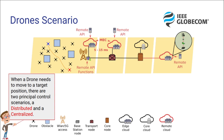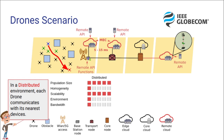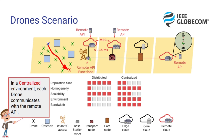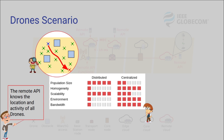When a drone needs to move to a target position, there are normally two principal control strategies: distributed and centralized. In a distributed environment, each drone communicates with its nearest devices, and the drones know the location and activity of the network. On the other hand, in a centralized environment, each drone communicates directly with the remote API, and the remote API knows the location and activity of all the drones.